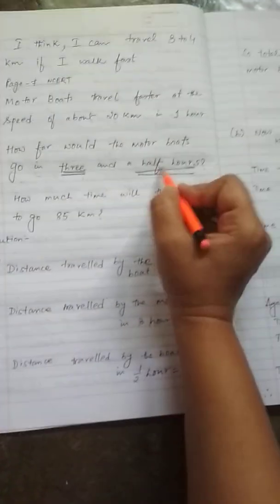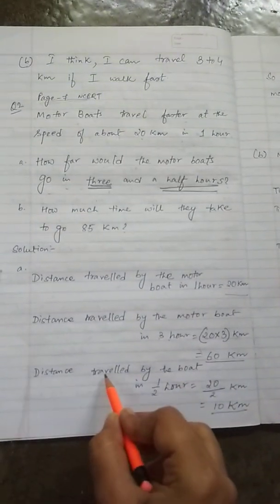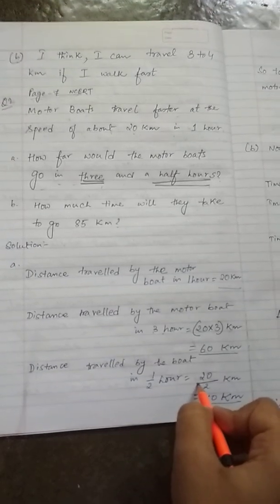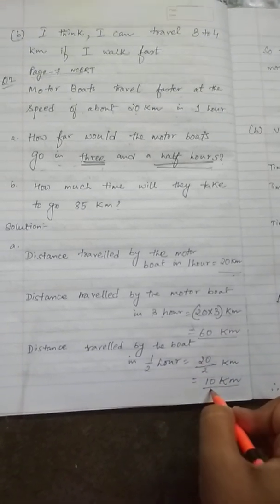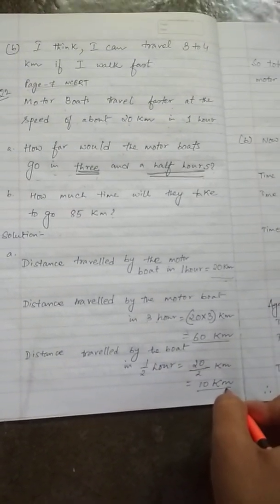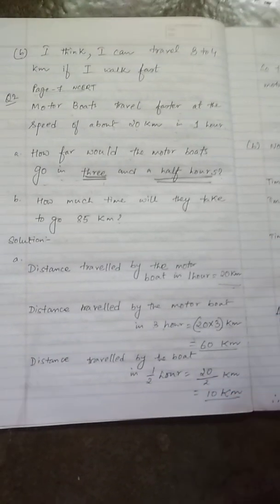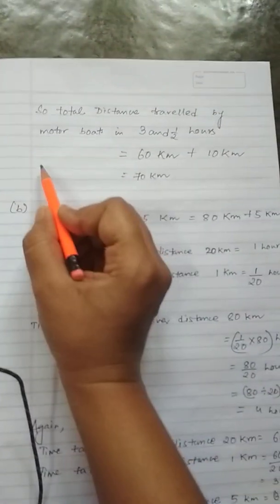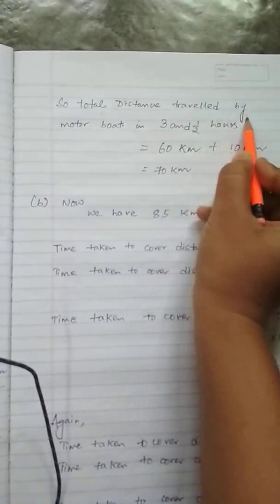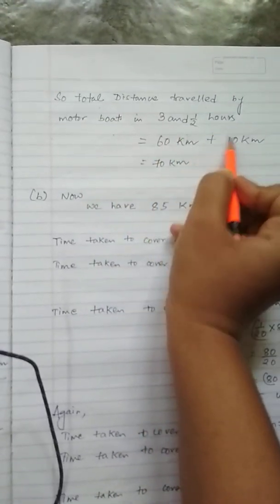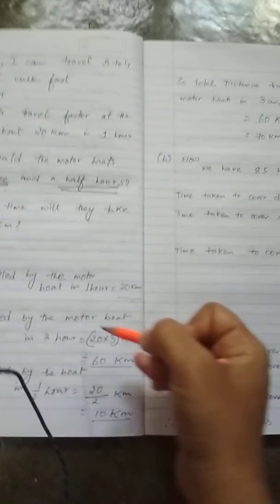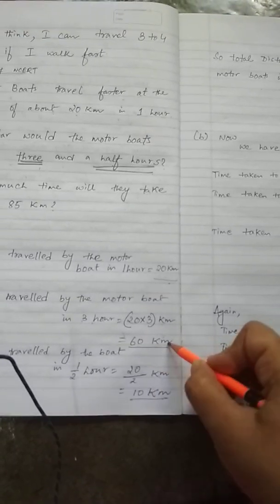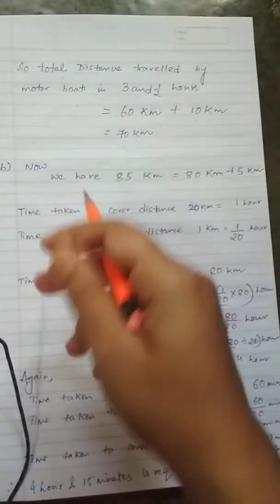Now the remaining is the half hour. Let's calculate the distance traveled by the boat in half hour. In one hour it is 20, so in half hour it will be 20 by 2 km, that is 10 km. Now you can guess how much total distance it is covering in three and a half hours. So total distance traveled by motorboats in three and a half hours equals 60 km plus 10 km, that is 70 km. From where 60 km? In three hours. And half hour 10 km. So 60 plus 10 is 70 km.